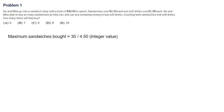So first, we have to calculate how many sandwiches they bought. We can just say that 30 divided by 4.5 is going to give us the maximum sandwiches they bought, and only the integer value in this will be the answer, which is 6 sandwiches.